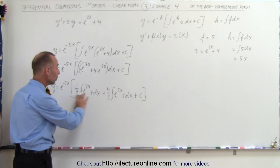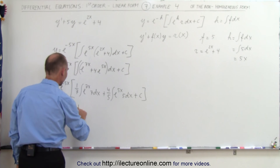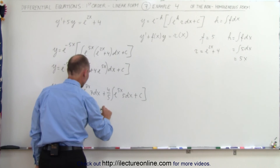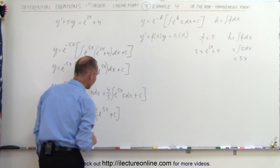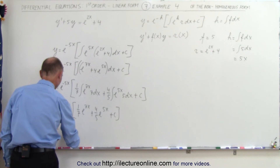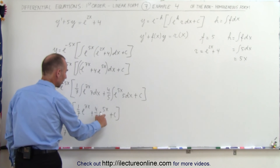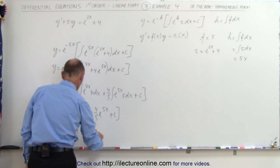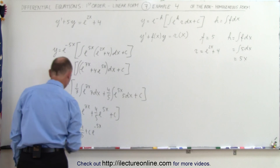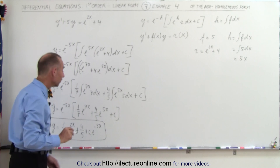Now I'm ready to integrate both integrals. So y is equal to e to the minus 5x times: 1/7 e to the 7x, plus 4/5 e to the 5x, plus a constant of integration. Multiplying through, I get y equals 1/7 e to the 2x, plus 4/5, because e to the minus 5x times e to the 5x cancels, plus a constant times e to the minus 5x. This is the solution to the original differential equation.